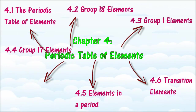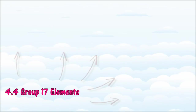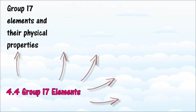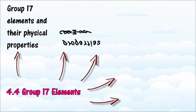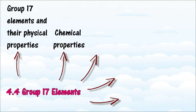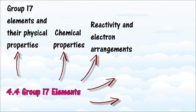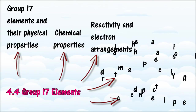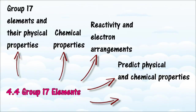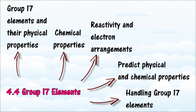In section 4.4, we will learn about elements in Group 17. At the end of this section, you should be able to list all Group 17 elements, state the general physical properties of chlorine, bromine, and iodine, describe changes in physical properties from chlorine to iodine, list and describe similarities in chemical properties of chlorine, bromine, and iodine, relate chemical properties to their electron arrangements, describe changes in reactivity down the group, predict physical and chemical properties of other Group 17 elements, and state safety precautions when handling Group 17 elements.